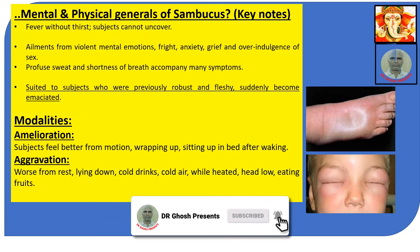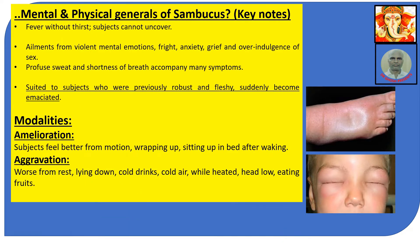Mental and physical generals continued. Fever without thirst. Subject cannot uncover. Ailments from violent mental emotions: anxiety, fright, grief, over-indulgence of sex. Profuse sweat and shortness of breath accompany many symptoms. Subjects who were previously robust and fleshy suddenly become emaciated.